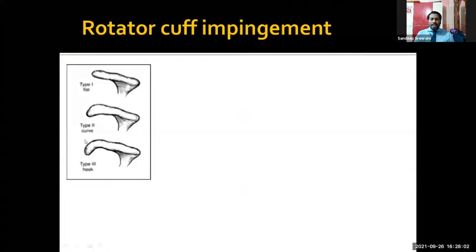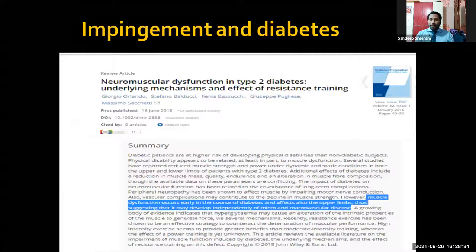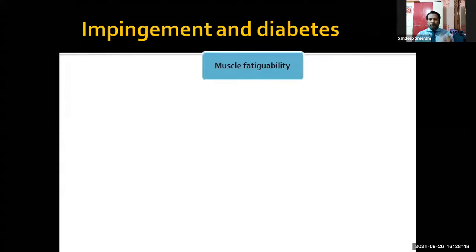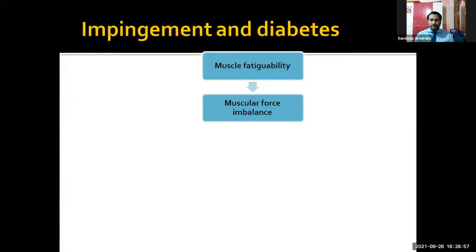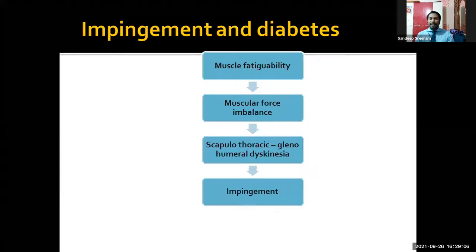Impingement occurs when the acromion is classified as type 3 anatomically — it has a hook type with a sharp end that can press upon the rotator cuff. It can be easily diagnosed with MRI where a small hook can be seen pressing upon the greater tuberosity when abducted. In diabetics, a paper done about 5–6 years ago showed that there is muscle fatigability causing muscular force imbalance among the abductors and adductors, leading to dyskinesia of the shoulder joint, which causes impingement and secondary frozen shoulder.